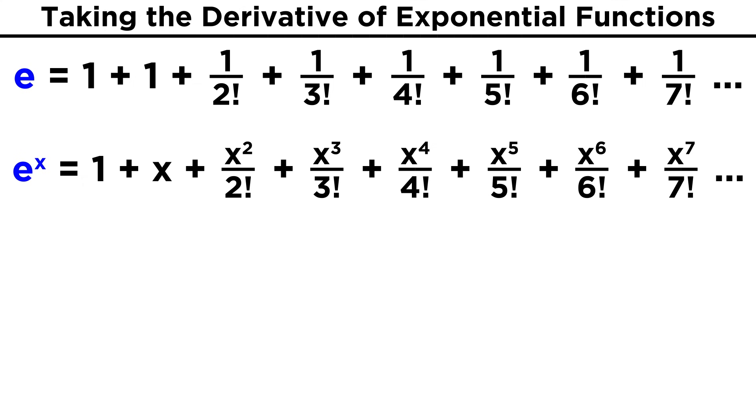If we want to represent the function E to the X in the same way, we can just tweak this series a little bit, putting in the necessary X terms, so that we get one plus X, plus X squared over two factorial, plus X cubed over three factorial, all the way down the line. So we can say that this series is equal to E to the X.